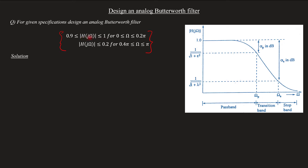The passband response runs from 0 to 0.25π. In the passband, the magnitude value is 0.9. So this value — 0.9 — is equal to 0.9 in the passband region.